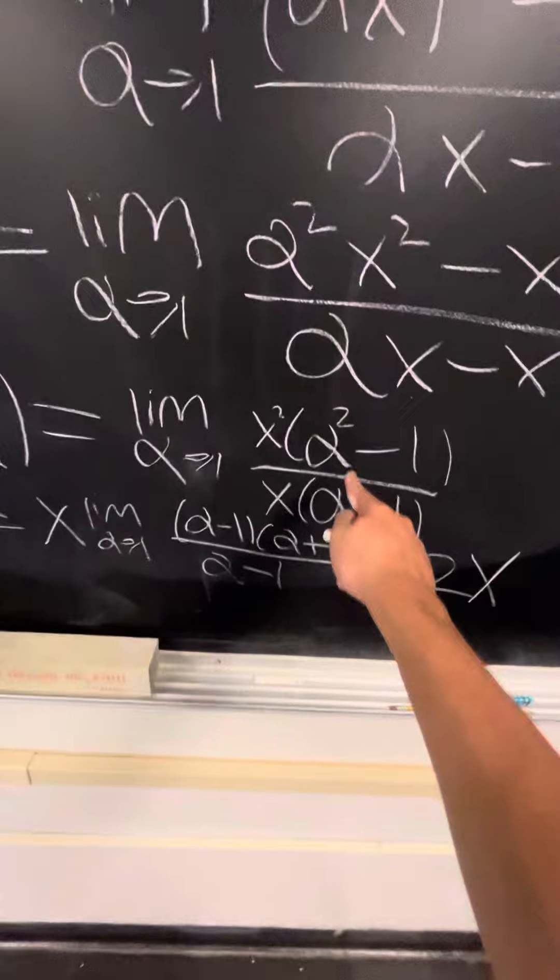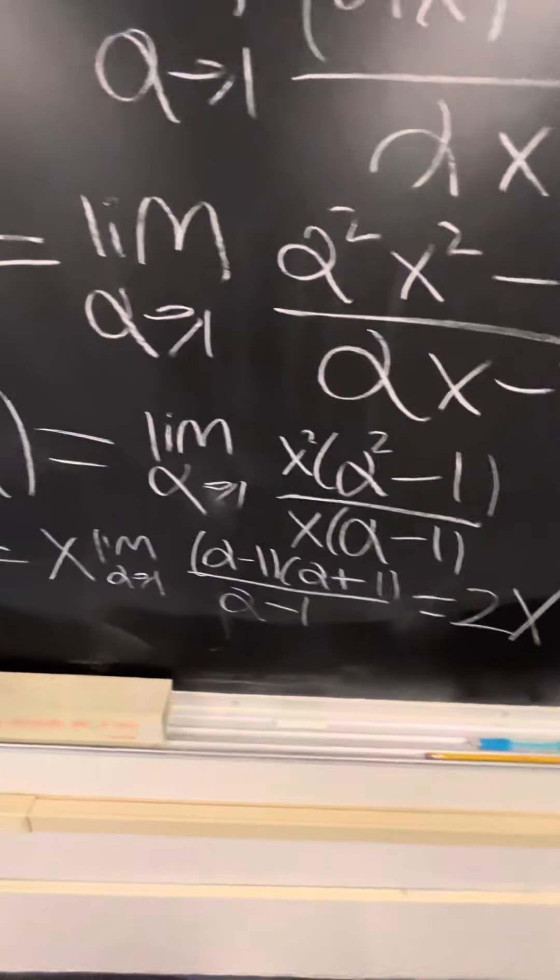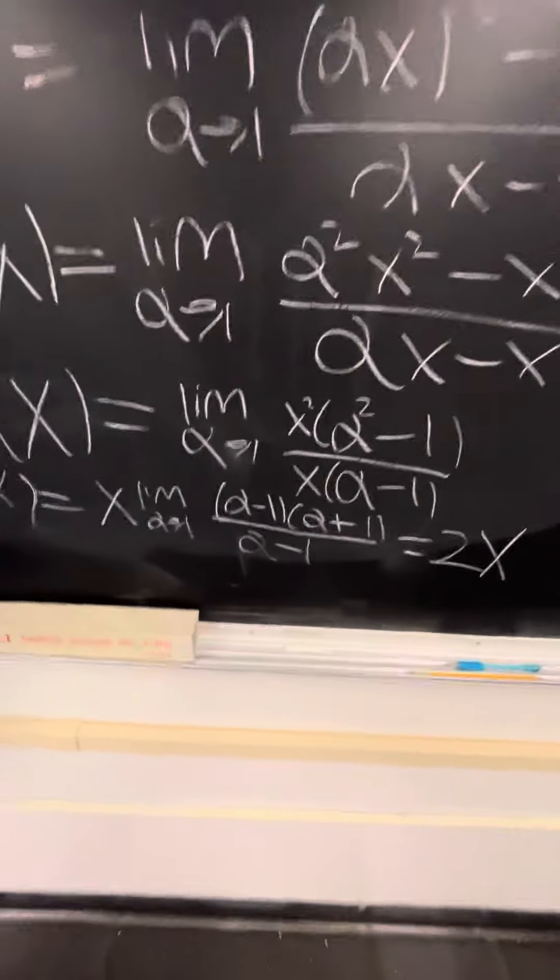So anyways, we expand alpha squared minus 1 over alpha minus 1 out. And we get 2. This is a very OG definition, a limit. And so you end up getting 2x.